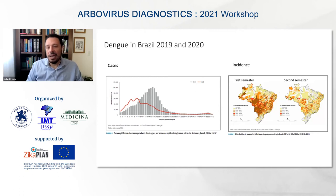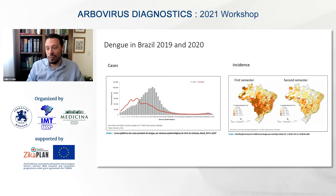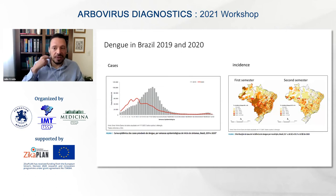In the first semester of 2020, the majority of dengue cases were concentrated in the Middle West region, especially Mato Grosso, Mato Grosso do Sul, parts of Paraná State, São Paulo State, and the northeast.